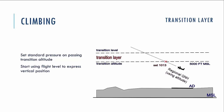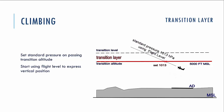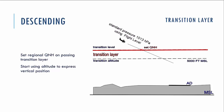When we climb through the transition layer and cross the transition altitude, we have to switch from regional QNH to the standard atmospheric pressure — 1,013 hectopascals, or 29.92 inches of mercury in the USA. After crossing this point, we start using flight level to express the vertical position of the aircraft. In the opposite case, when descending through the transition layer and crossing the transition level, we have to set regional QNH and forget about flight levels, starting to use altitude to express the vertical position of the aircraft.